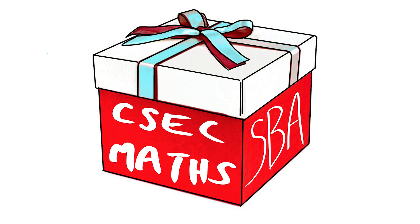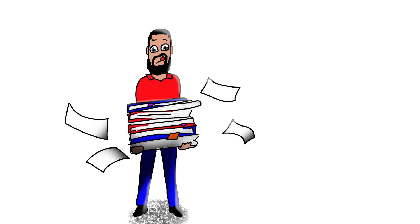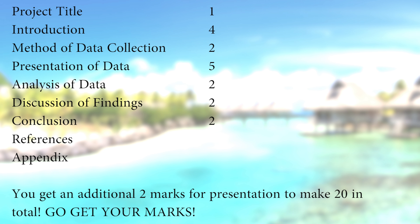There are two more sections — references and appendix. A nice thing to put in your appendix is the questions you asked in your questionnaire or interview. You can have multiple appendices. For references, cite any book, article, newspaper, magazine, or website that helped you out. It helps make your project neater, and while it's not heavily marked, if you're missing references your teacher can take marks based on the appearance of your project.